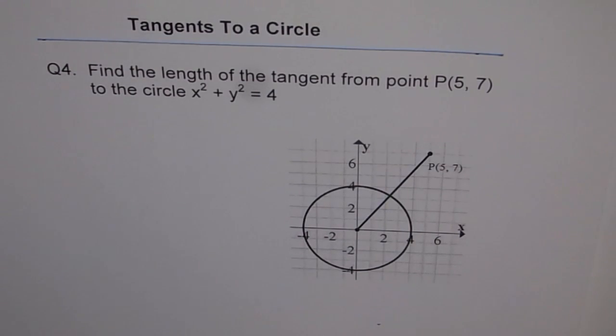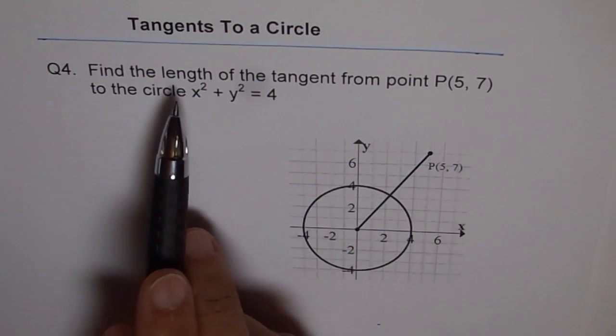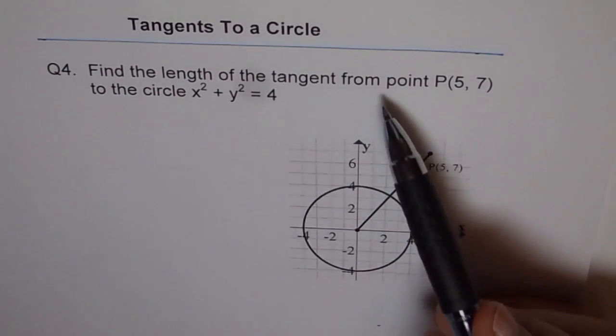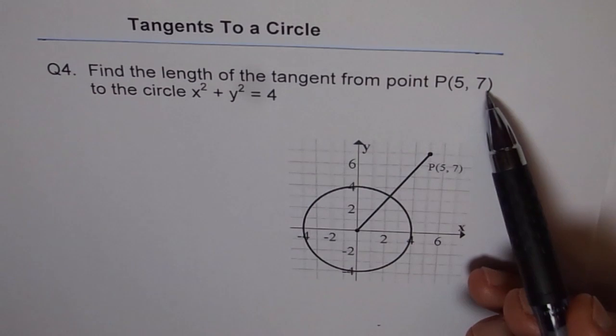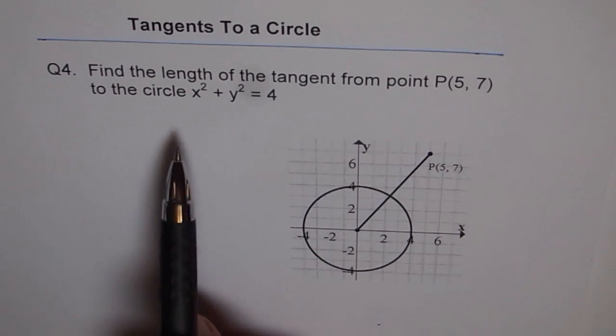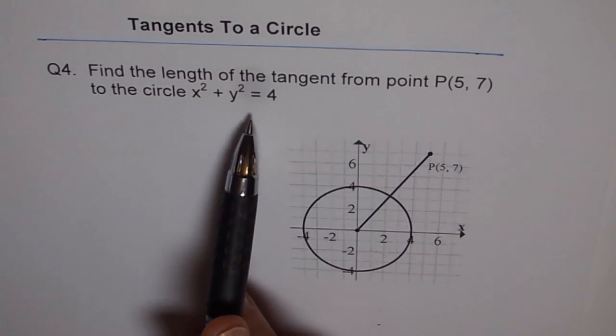Tangents to a circle. Question 4. Find the length of the tangent from point P(5, 7) to the circle x² + y² = 4.